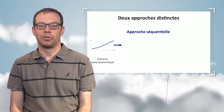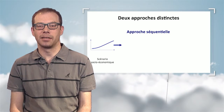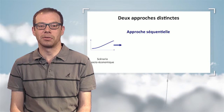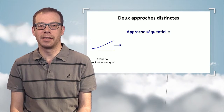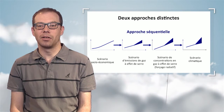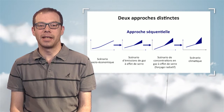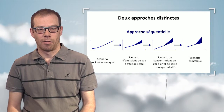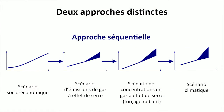There are two approaches to how a climatic scenario is prepared. The first is a sequential approach: we start with a socio-economic scenario, which may then be translated into a greenhouse gas emission scenario. Then, because we have knowledge of the biogeochemical cycles, we can translate this into a scenario on the concentration of greenhouse gases, assess the radiative forcing associated with those concentration tracks, and finally predict a climatic projection.